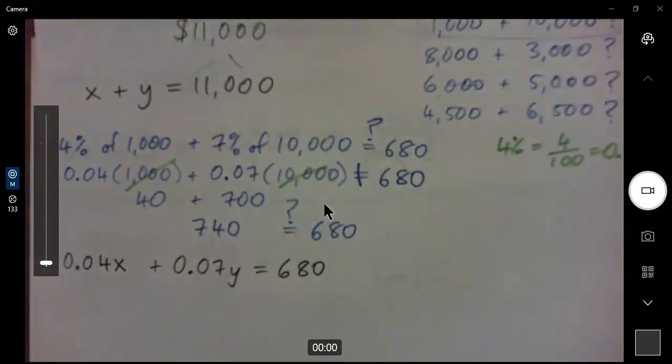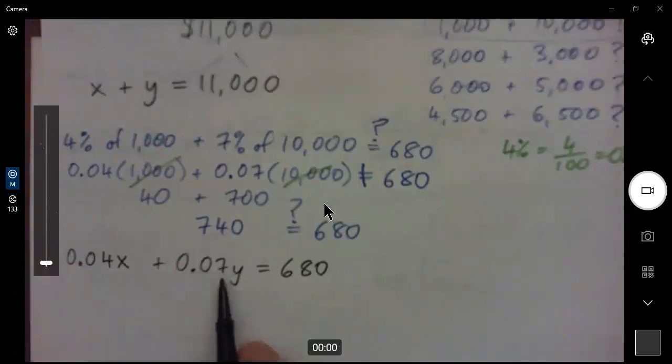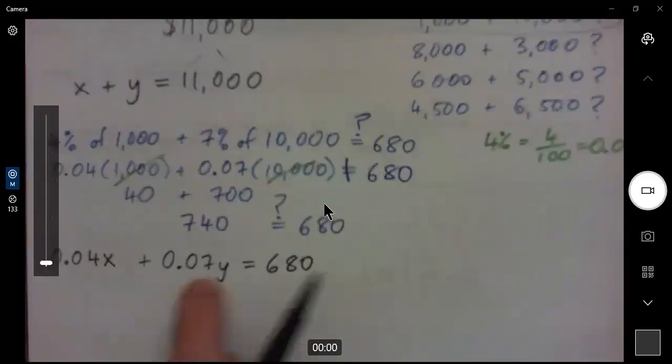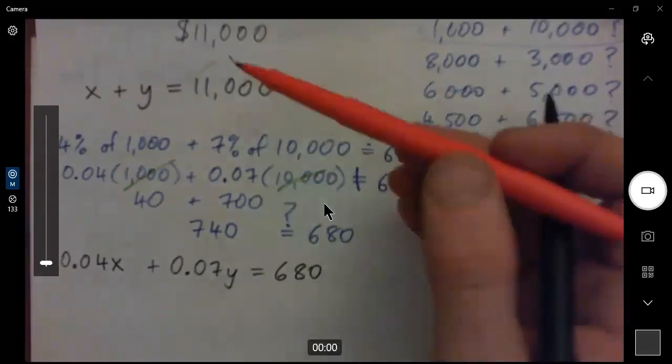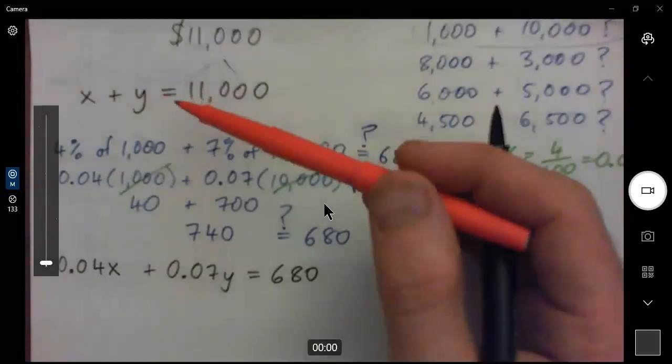Yeah. Isn't that supposed to be 0.007? No, 0.07, yeah, 7%. 0.07, yep. Oh, right, because we're not using the same numbers as last time. So you can solve this by graphing, by elimination, or by substitution.